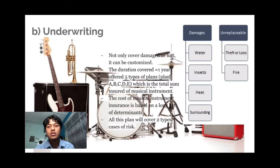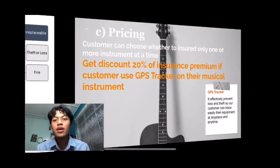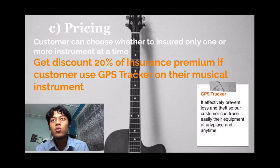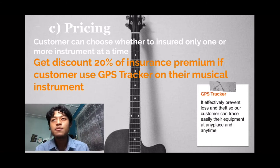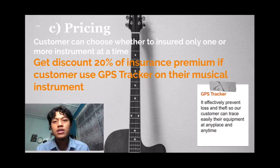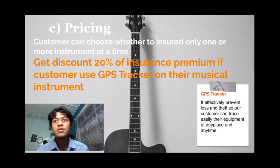The second type of unreplaceable loss is caused by natural perils such as fire and flood. We cannot avoid natural perils that happen to us, but we can cover the instrument. We continue to pricing. Customers can choose whether to insure only one or more instruments at a time. They will get a 20% discount on the insurance premium if the customer uses a GPS tracker on their musical instrument. A GPS tracker tracks where the instrument is, effectively preventing loss and theft, so customers can trace their equipment at any place and anytime.